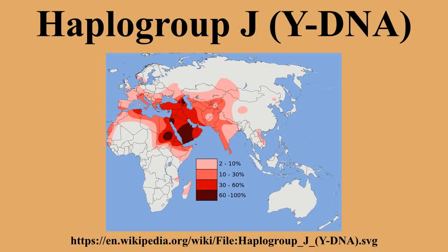In Y-chromosome phylogenetics, subclades are branches of haplogroups defined by single nucleotide polymorphisms, also known as unique event polymorphisms.